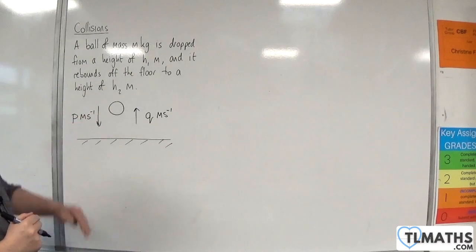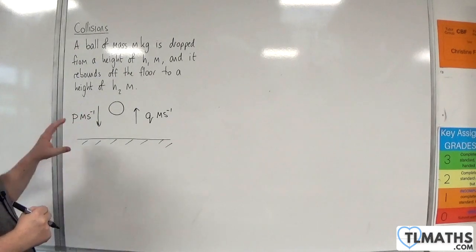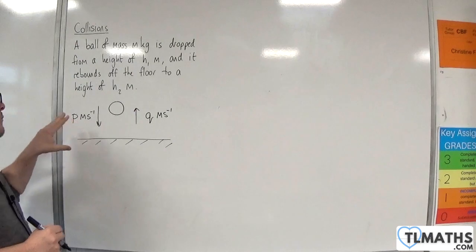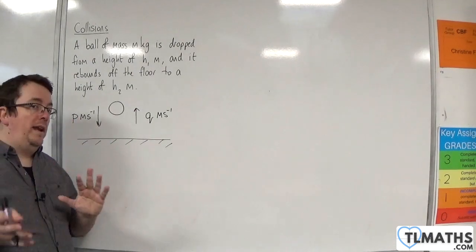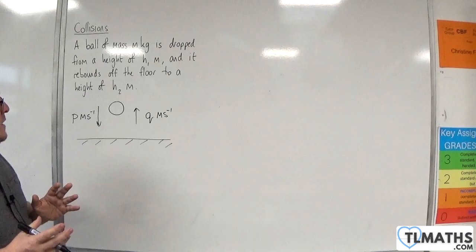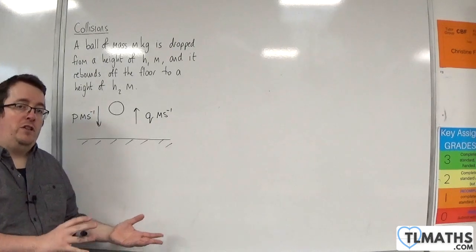Where its velocity then will be zero. Now what we're going to do is see if we can write p and q in terms of h1 and h2. And then we should be able to get a formula for the coefficient of restitution.